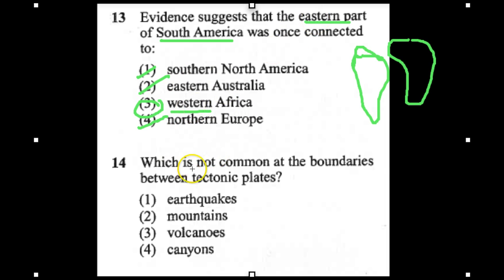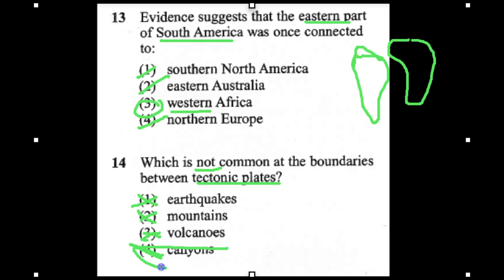Number 14: which is NOT common at the boundaries between tectonic plates? Earthquakes, mountains, volcanoes, or canyons? Canyons are most usually caused by things like glaciers, not by tectonic plates. Volcanoes, earthquakes, and mountains all are common at tectonic plates. So the answer is canyons.